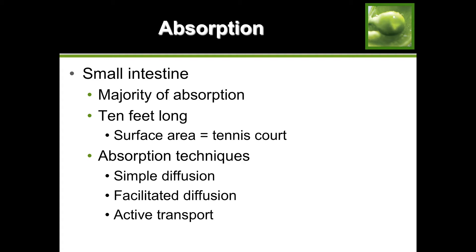How do we fit such a large surface area into our small abdomen? Through a technique called folding. Take a sheet of paper, fold it in half, fold it again, and again - it's still the same surface area when you open it, but folded it becomes smaller. Your small intestine absorbs nutrients three ways: simple diffusion, facilitated diffusion, and active transport.